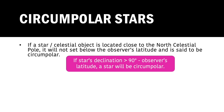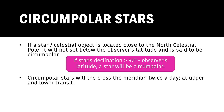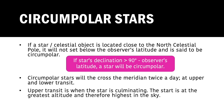Circumpolar stars will cross the meridian twice a day, at upper and lower transits. Upper transit is when the star is actually culminating — the star is at its greatest altitude and therefore highest in the sky. This means it is the best time to observe a star in the night sky.